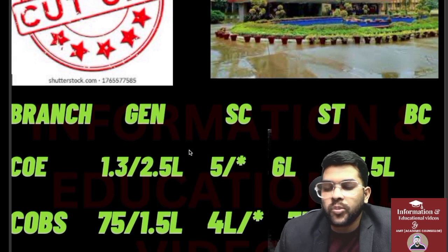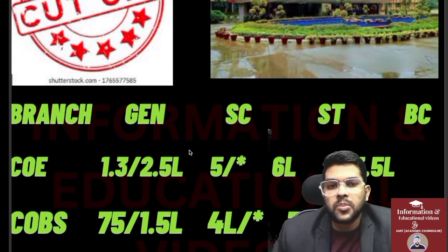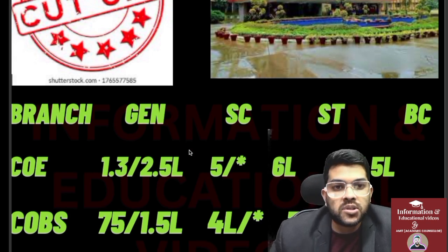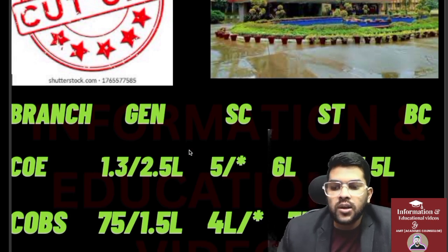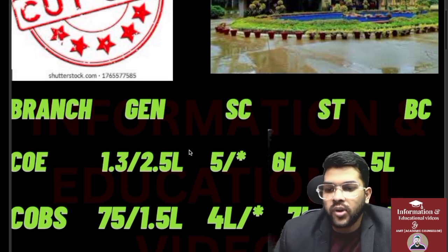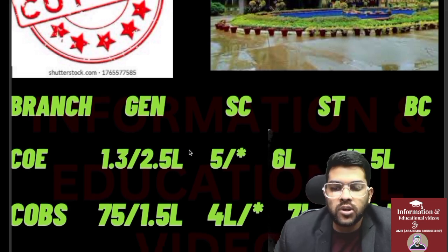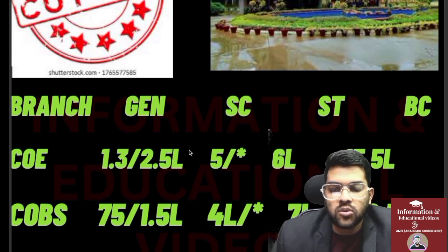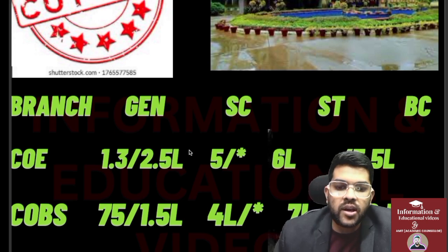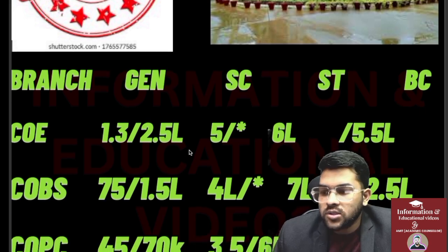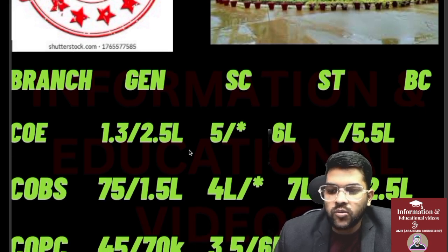For COE, the JEE rank cutoff is 1.3 lakh and 2.5 lakh for general — before slash is for outside Punjab and after slash is for homestead (Punjab), as homestead reservation pushes the cutoff to a very high rank. For SC, 5 lakh is applicable — that is for other state; there is no separate homestead cutoff for SC. For ST, 6 lakh, and for BC, 5.5 lakh.